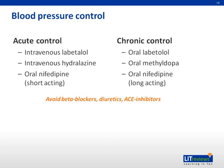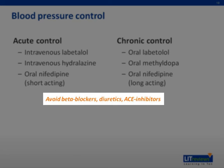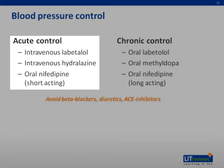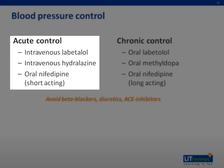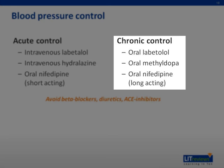Blood pressure control may be achieved by a range of oral or intravenous antihypertensive agents. Certain groups of antihypertensives are not safe for usage in pregnancy and should be avoided: these are beta blockers, diuretics, and ACE inhibitors. For acute control of elevated blood pressures, agents such as IV labetalol, IV hydralazine, and short-acting peroral nifedipine may be considered. For chronic control of elevated blood pressures, agents such as peroral labetalol, peroral methyldopa, and long-acting peroral nifedipine may be considered.